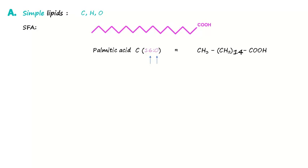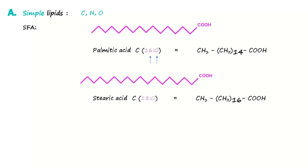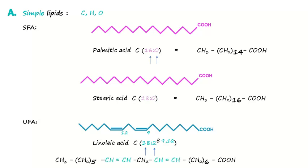Another example of saturated fatty acid is stearic acid. The formula is C18 for the number of carbons and 0 for double bonds. Unsaturated fatty acids: let's take an example with 18 carbons. Notice the formula C18 for the number of carbons and 2 for the double bonds. The double bonds are written delta 9 and 12, showing the position. This is linoleic acid.